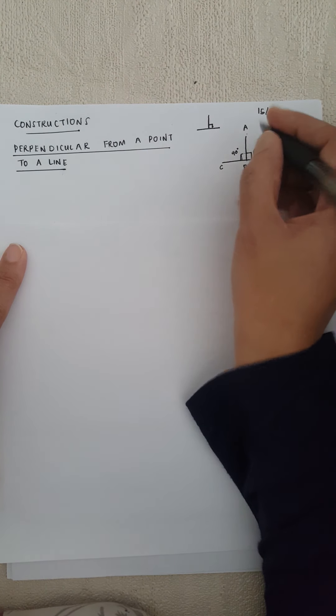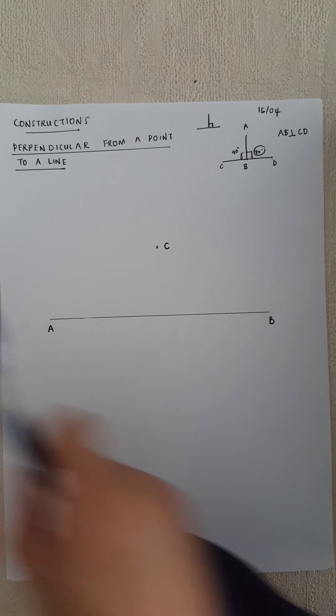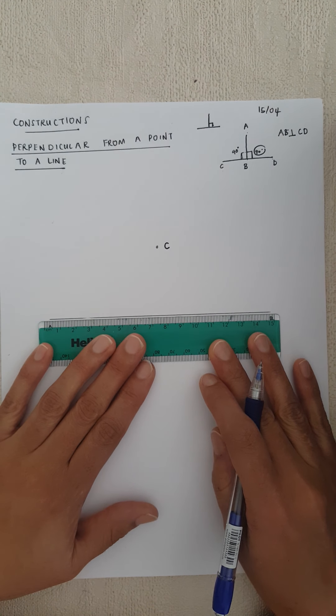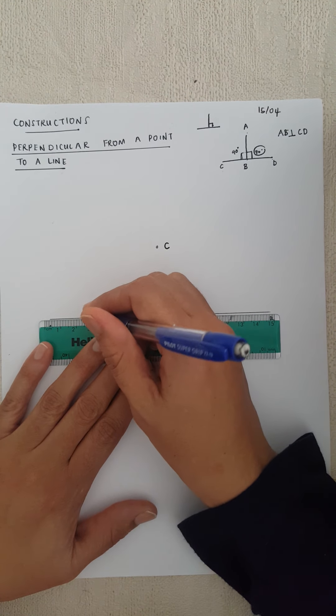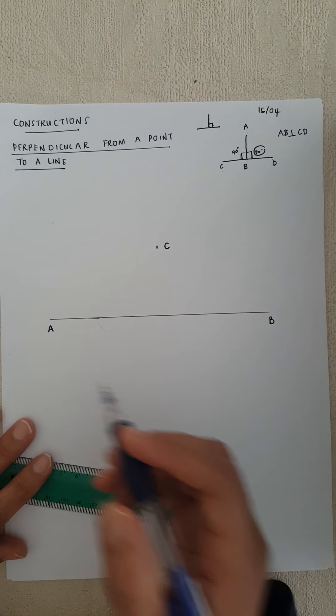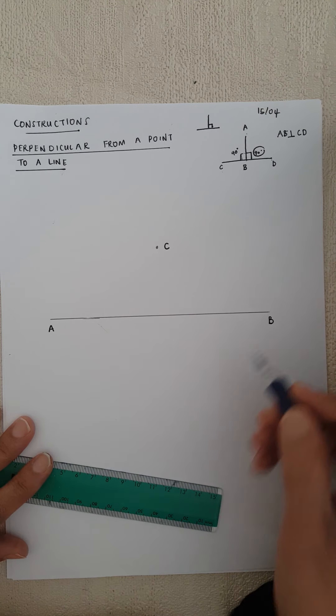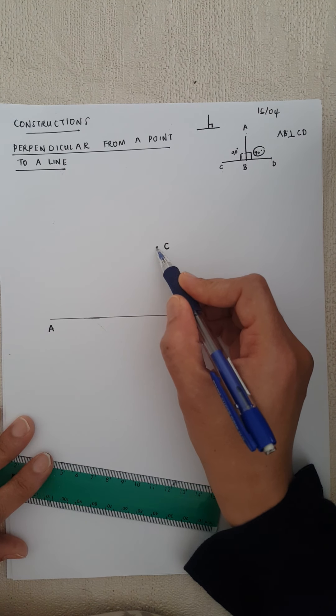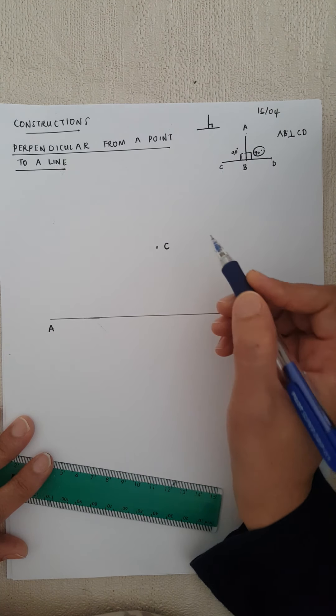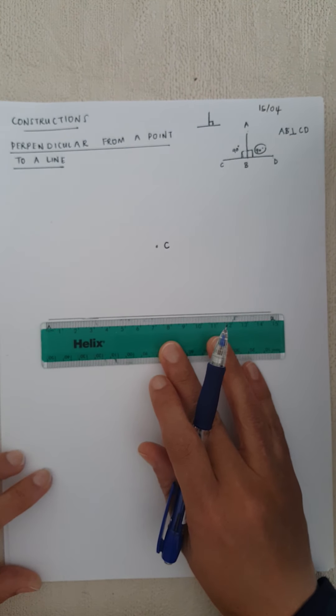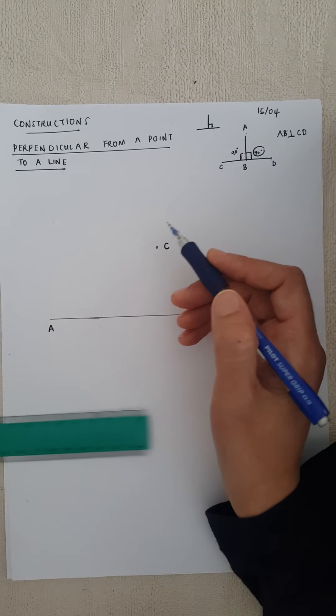But this one is telling us to draw a perpendicular from a point to a line. So we're going to take our ruler and I've just drawn a straight line here — any measurement, you just draw a line across your paper — and I've named it AB. Now I've just drawn any point in the middle here on top, and I've called it C. There's no measurements. Take your ruler, make sure your pencil is sharp, you just draw a line there and put a point.